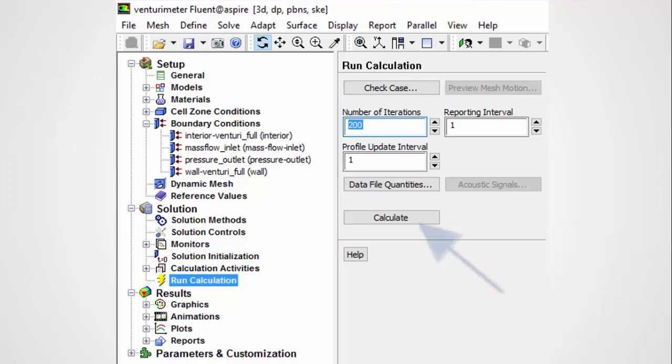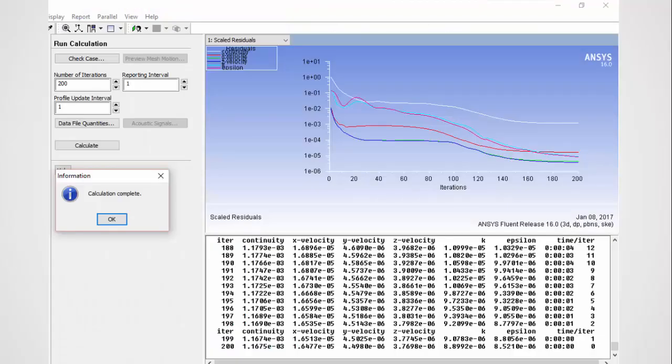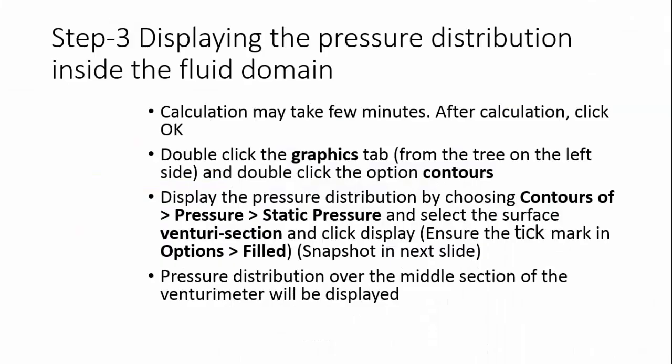After completion of computation, step 3 is calculating the mass flow rate through the VentureMeter from the pressure values at the inlet of the VentureMeter and at its throat.